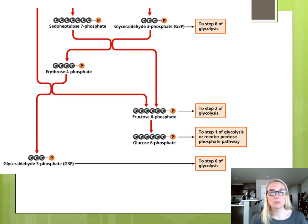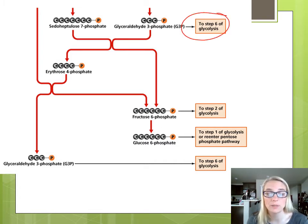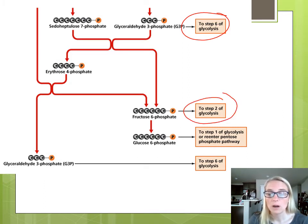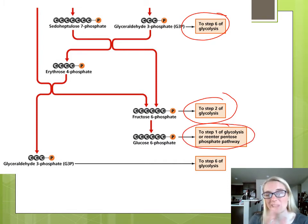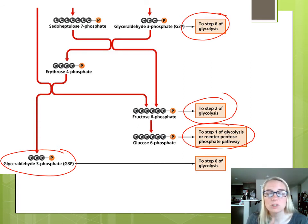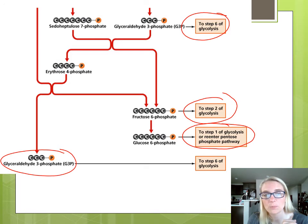In the second half of the PPP, we see some things that look familiar. We have glyceraldehyde 3-phosphate — G3P — which can slide right into step 6 of glycolysis. We have fructose 6-phosphate, which can go into step 2, and glucose 6-phosphate, which can go back in between steps 1 and 2 of glycolysis. And then some more G3Ps. It's just an alternative pathway — what can we do with this glucose based on the needs of the cell? So that's our PPP, alternative to glycolysis number one.